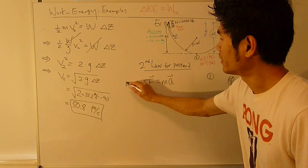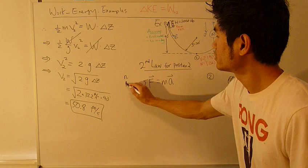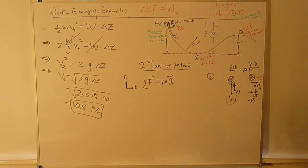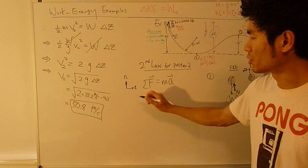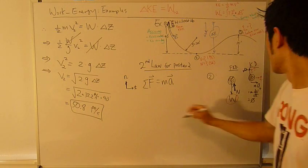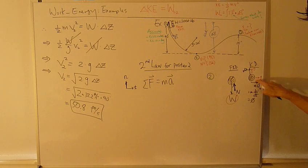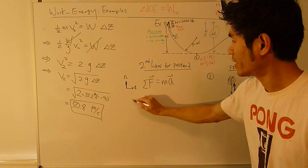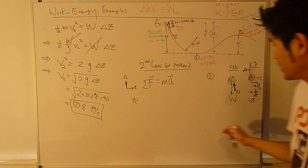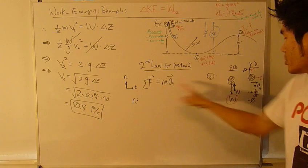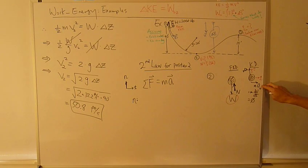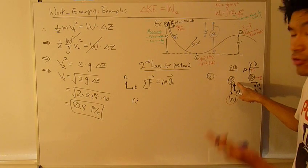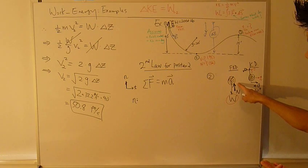We're going to apply second law for position 2. Sum of forces equals M-A. This is my normal direction and this is my tangent direction. My tangent is my curve in the coordinate. The only thing I'm interested in is the normal direction.